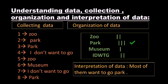You are collecting some data. Now, organization means you need to show this in such a manner so that we can easily understand and take a decision. After collecting data, the friends who are collecting the votes make a table. The table, shown in green color, has: zoo — two, amusement park — three, museum — one, and IDWTG (I don't want to go) — two. Now the interpretation of data means what will be our decision. Which vote is maximum? That is amusement park. So most of them want to go to the park. This is our interpretation of data — from the collection of data, after organizing it, the interpretation is that everyone will go to the park.